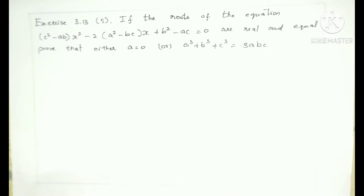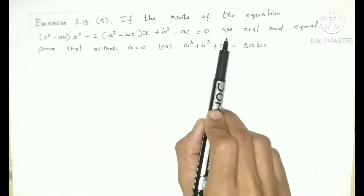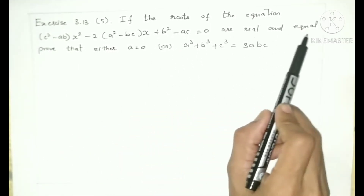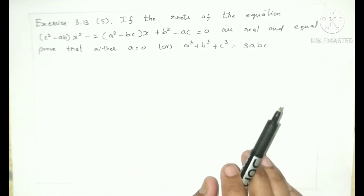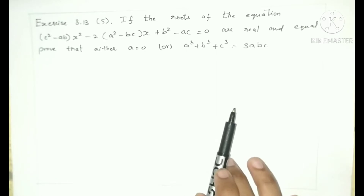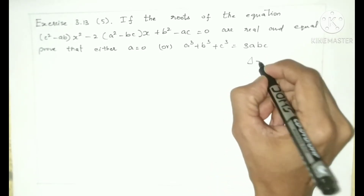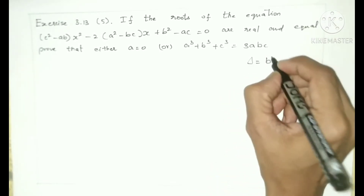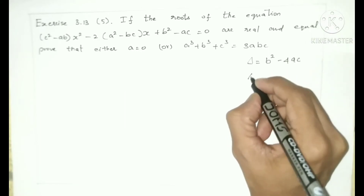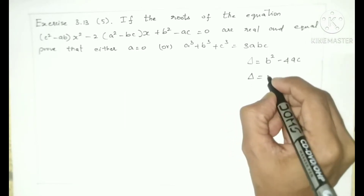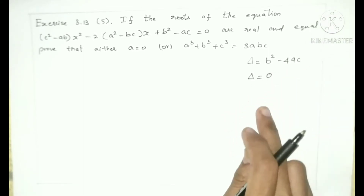In the given equation, the roots are real and equal. Which means we apply the delta formula. So delta equals b squared minus 4ac, and since the roots are real and equal, delta is equal to 0.